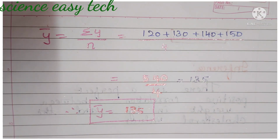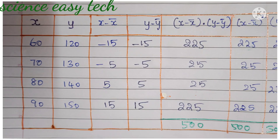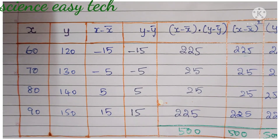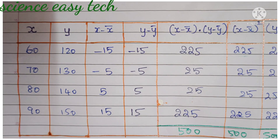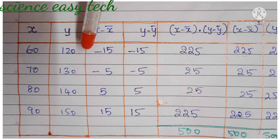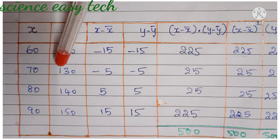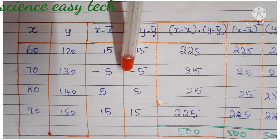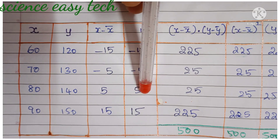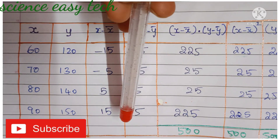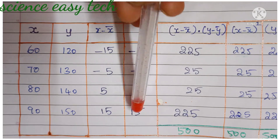Next we find y − ȳ, which means y − 135. So: 120 − 135 = −15; 130 − 135 = −5; 140 − 135 = +5; 150 − 135 = +15. We have now found both x − x̄ and y − ȳ.